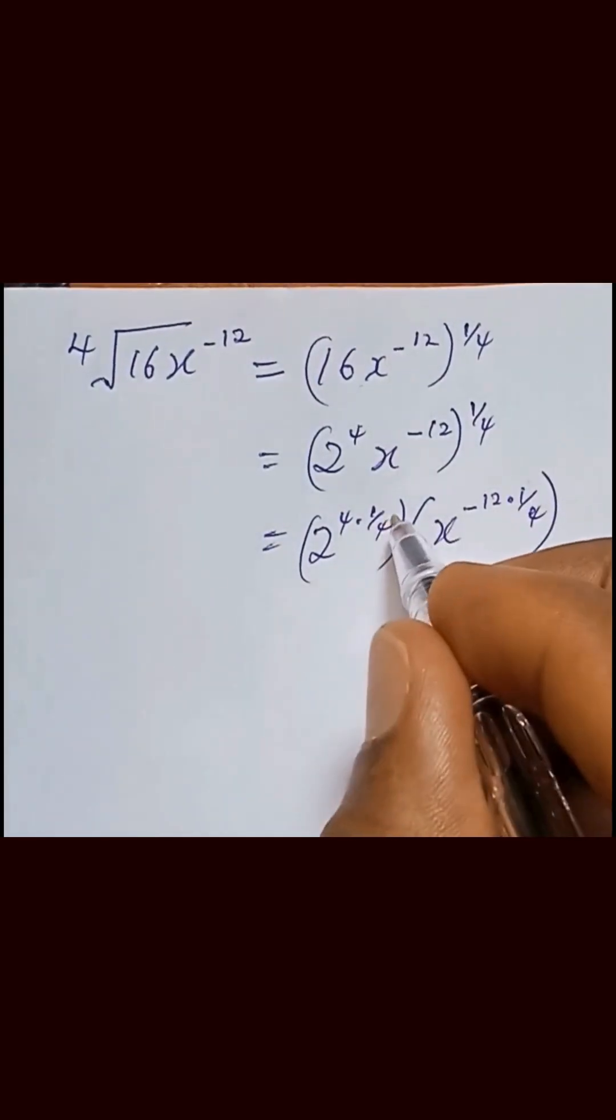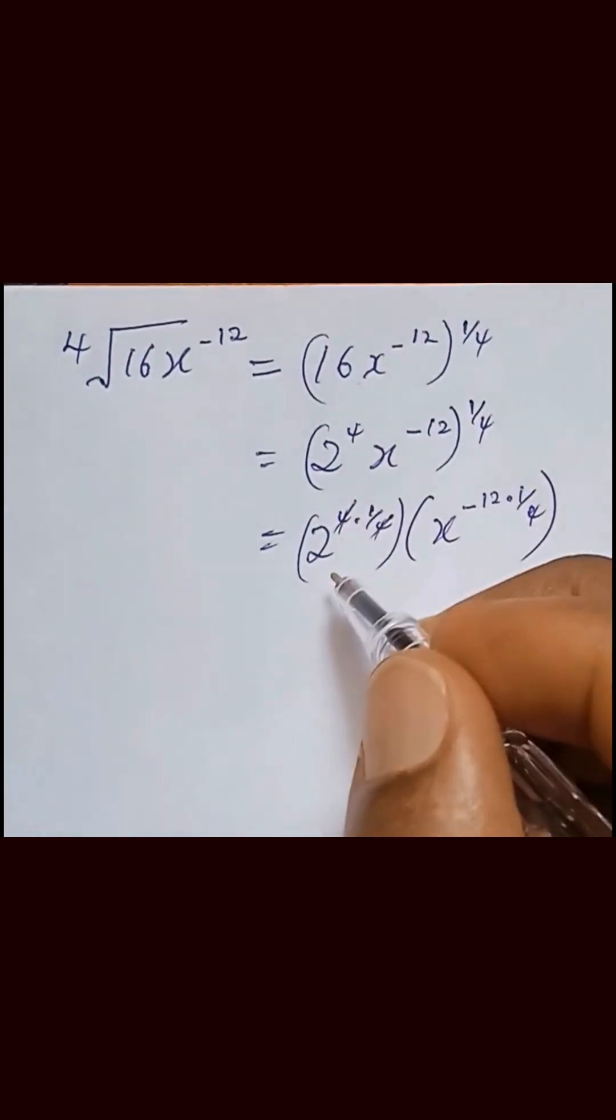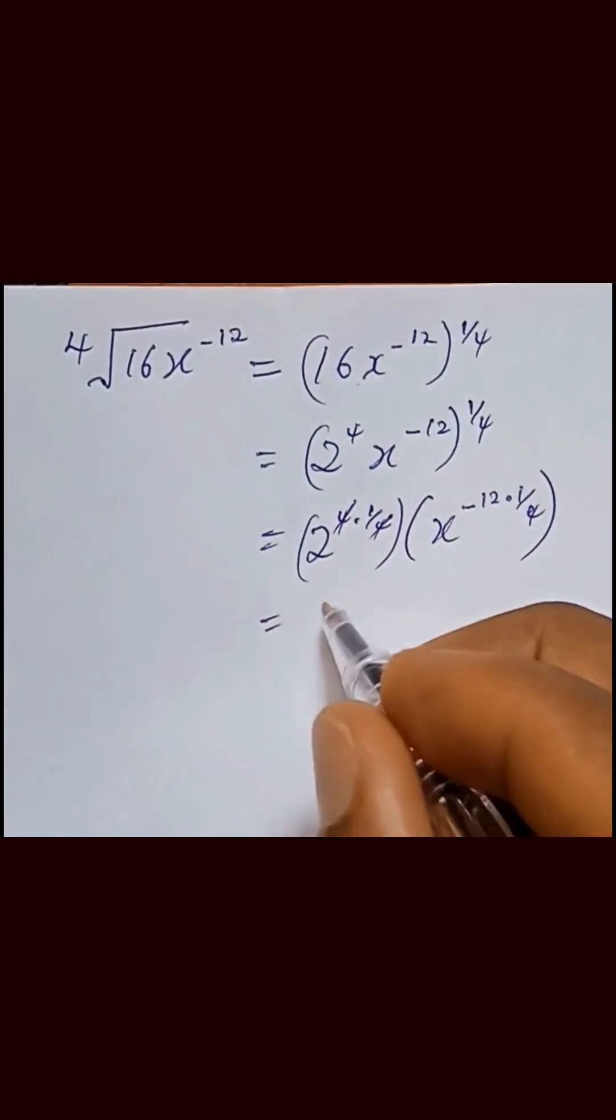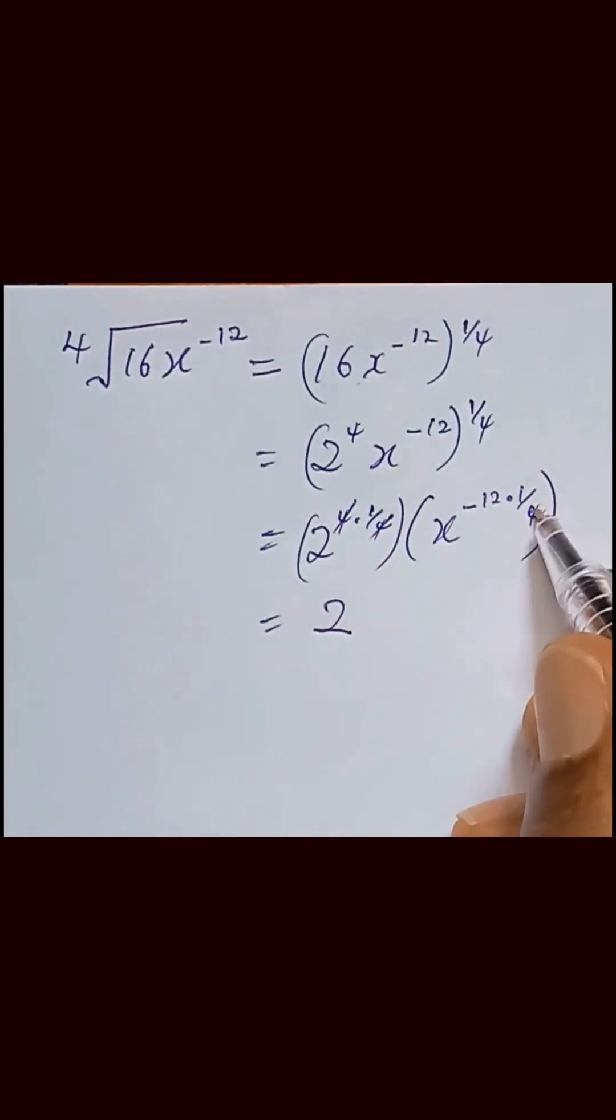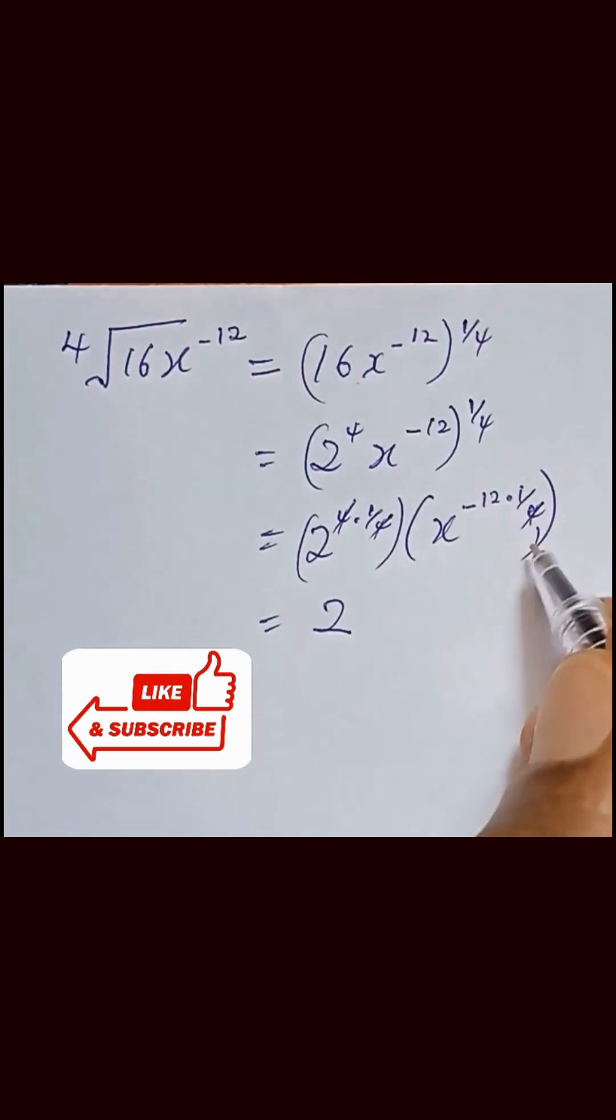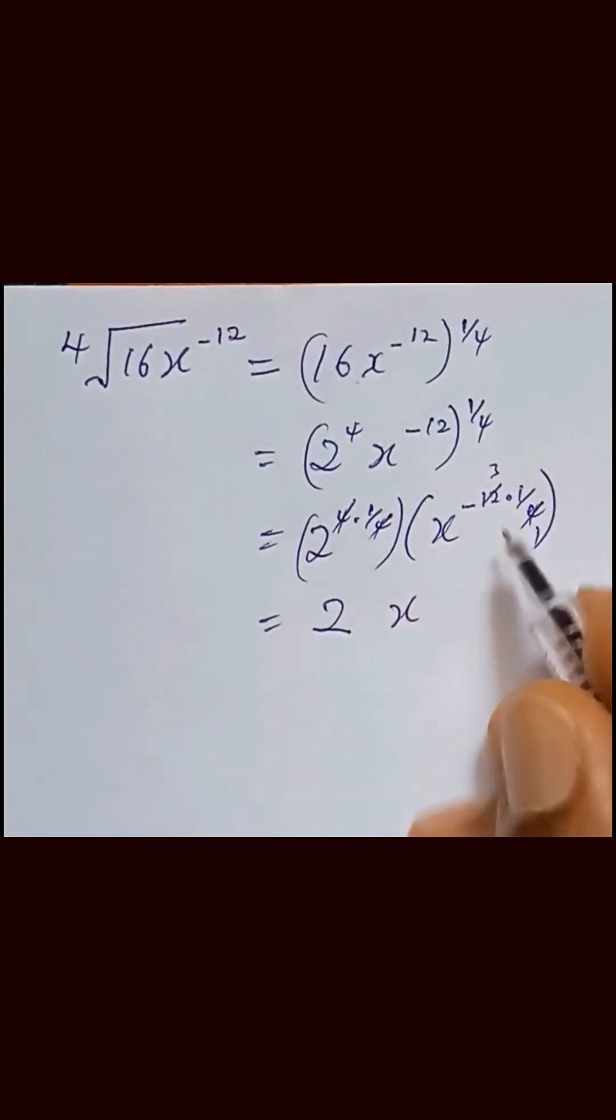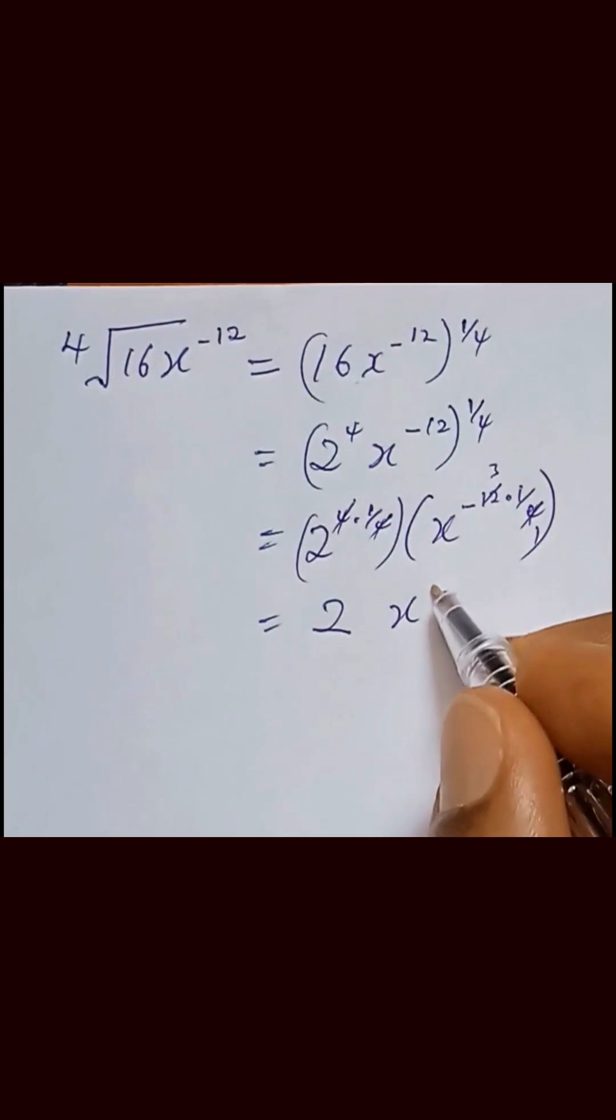So 4, we cancel out 4 and we are left with 1 for this side. So here 4, here 1. 12 divided by 4 and that will give us 3. And on the other side, this term will now be equal to x raised to the power minus 3.